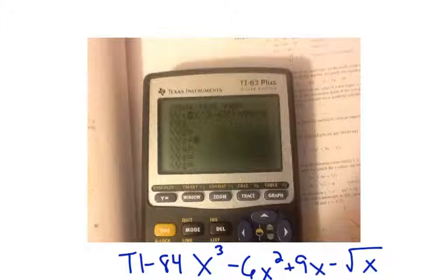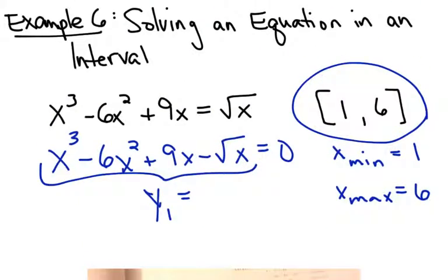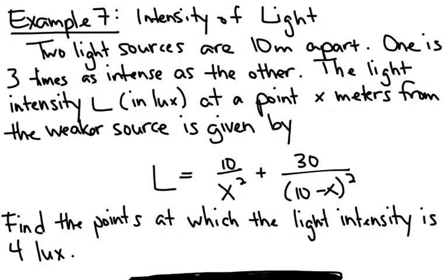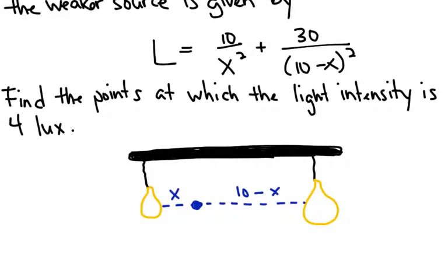If you're given an equation in this format, in order to put it into the calculator to find the solution, make sure the equation equals zero. Now let's try an application problem where we want to use our graphing calculator to help us solve. Two light sources are 10 meters apart. One is three times as intense as the other. Light intensity in a unit called lux — that's like how bright the light is.